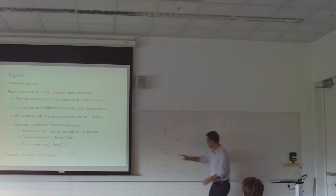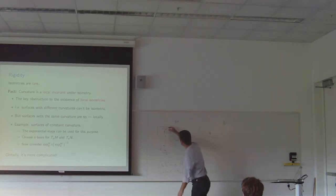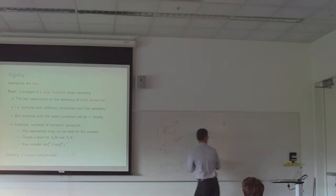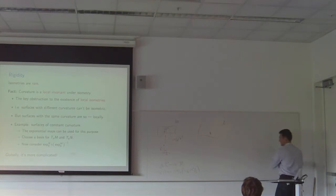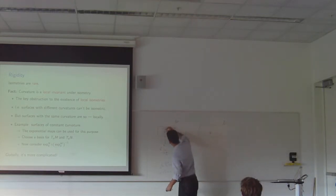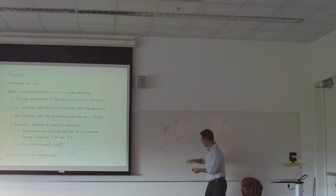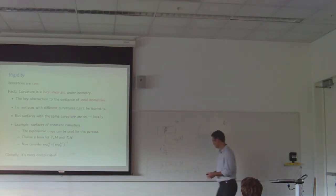Actually that should be capital E1 and capital E2 for the basis vectors, because the basis is up in the tangent plane. So we have capital E1 here, capital E2 here, and then these map onto the coordinate vectors little e1 and little e2.